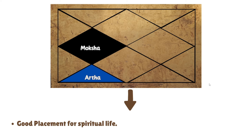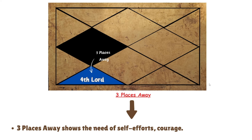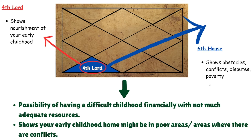When the fourth house of happiness is sitting in the house of obstacles and challenges, you should understand that regularly facing challenges in life will eventually lead you to realize there is something more than materialistic pleasures — and that is when your journey towards spiritual life will begin. Also, the fourth lord is going three places away from its own house, which signifies courage, risk-taking ability, and self-effort. So a lot of self-effort and courage from your end is needed to improve the significations of the fourth house.